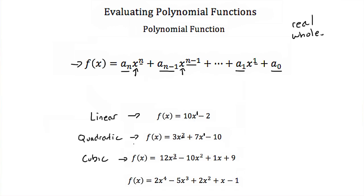And then lastly, 2x⁴ − 5x³ + 2x² + x − 1. Our highest exponent is 4, so we would call this a quartic function.